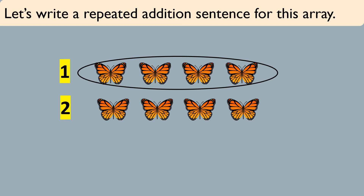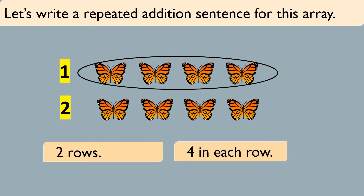Let's write a repeated addition sentence for this array. When we arrange objects in the form of an array, we can count them quickly. There are 2 rows here and each row has 4 butterflies in it, which means we will add the number 4 two times. 4 butterflies plus 4 butterflies equals 8 butterflies. It's called repeated addition because we are adding the same number over and over again. It was much quicker than counting these butterflies one by one.